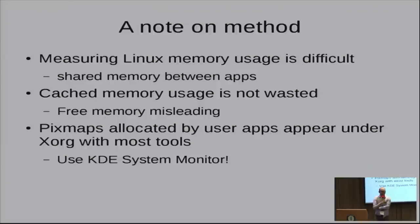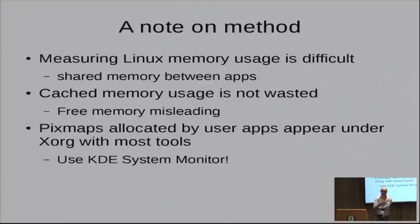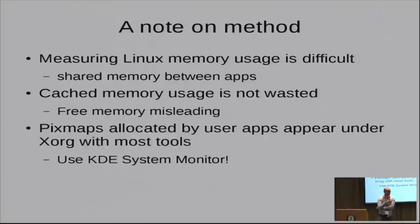It is hard to measure memory usage on Linux accurately. Linux shares memory between applications very well, making it easy to overestimate because default tools count shared memory once for each application using it. Better tools take memory used privately by the application, add the shared memory, and divide each shared component by the number of applications using it — called proportional shared size rather than resident set size. Also, people often say they have no free memory under Linux — that's because Linux caches libraries that were loaded for later use.